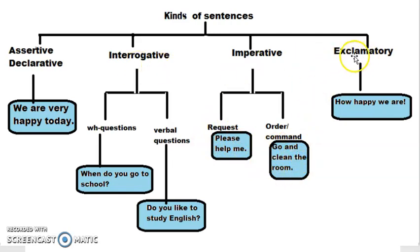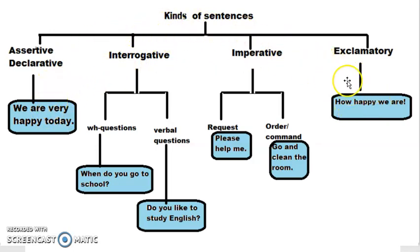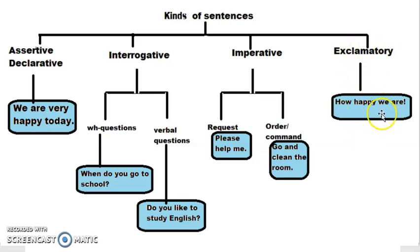Now fourth type — exclamatory sentence. 'How happy we are.' This is an exclamatory sentence with an exclamation mark at the end. Notice that 'How happy we are' and 'We are very happy today' have the same meaning, but their structure is different. The first is assertive; the second expresses strong feelings. In an exclamatory sentence we express our strong feelings and emotions, often using words like 'Oh' to express feelings.